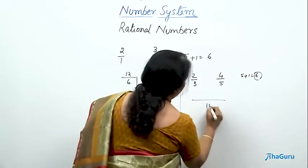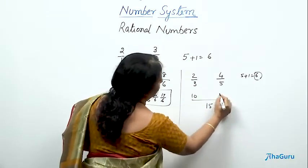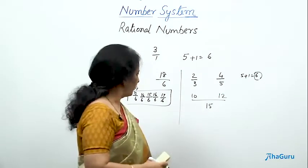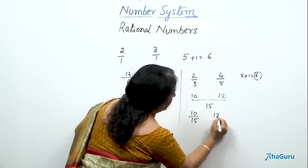So, this becomes 15. 5, 2s are 10. And what is this? 3, 5s are 3, 12. Isn't it? Yeah. 4, 3s are 12. Okay. Now, the two fractions are 10 by 15 and 12 by 15.